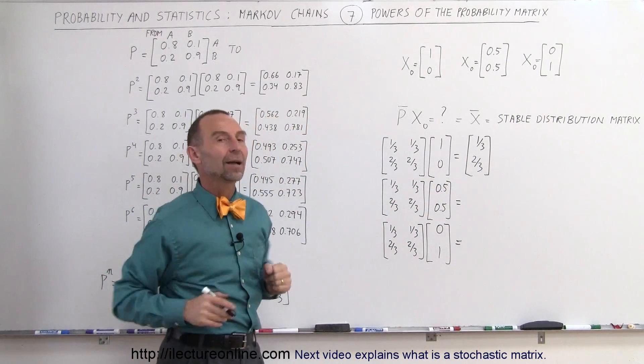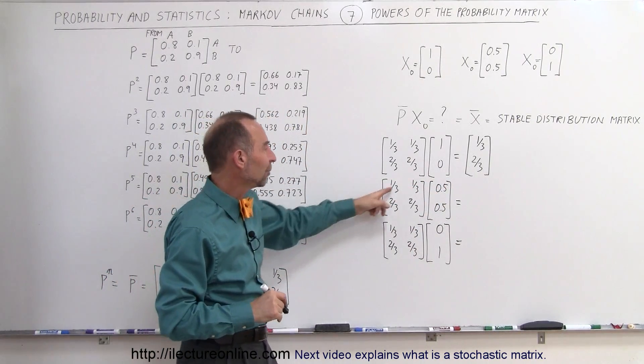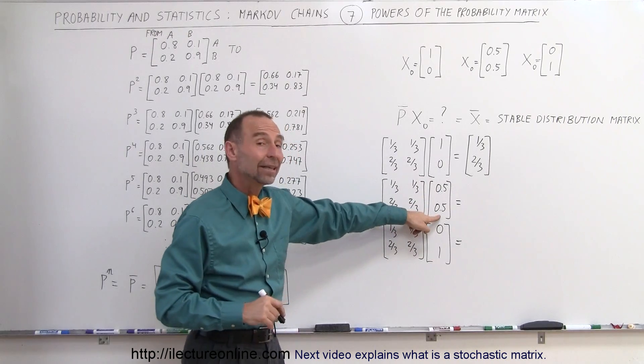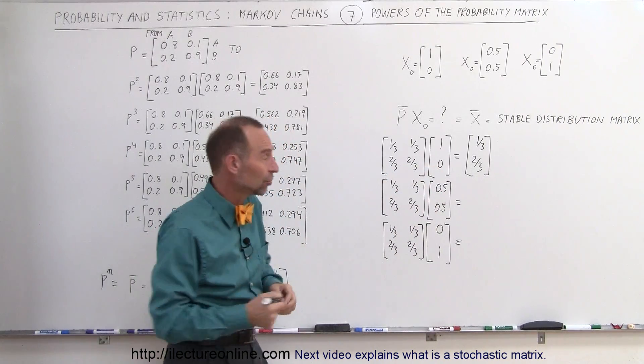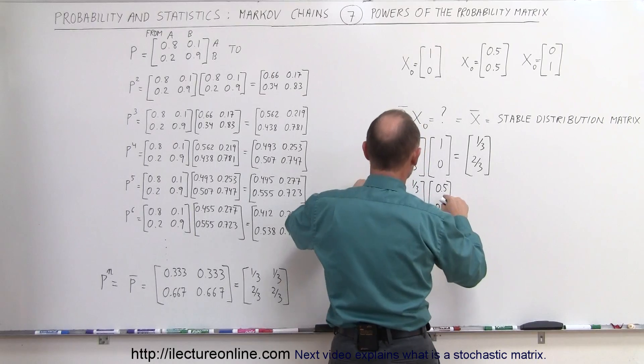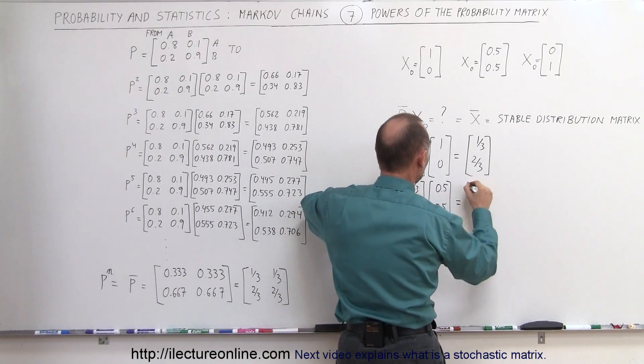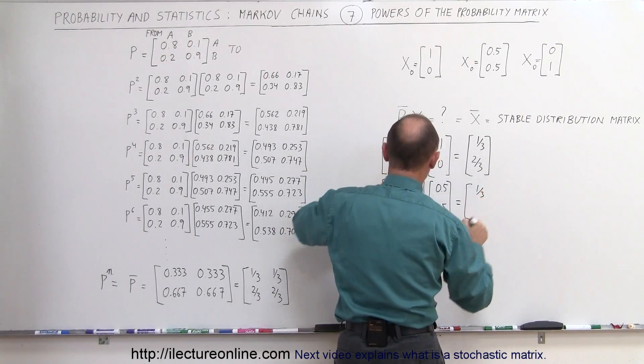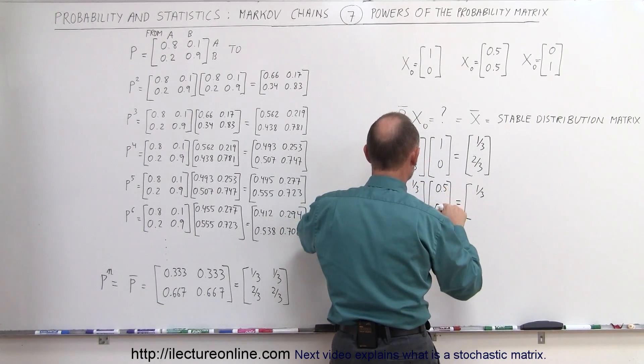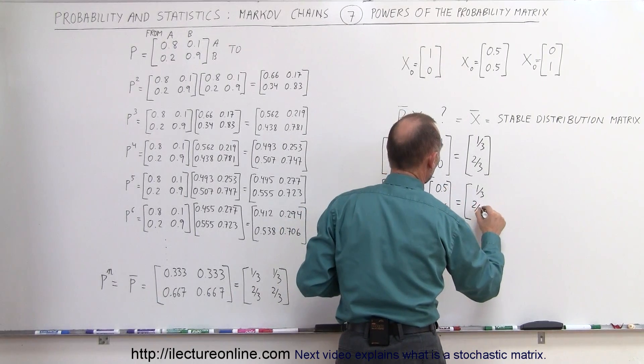Now what happens if we start with an initial state like this, instead of like that? Do we get the same result? Let's find out. So this would be one-third times one-half, plus one-third times one-half, which indeed gives us one-third, and two-thirds times one-half, plus two-thirds times one-half, gives us two-thirds.